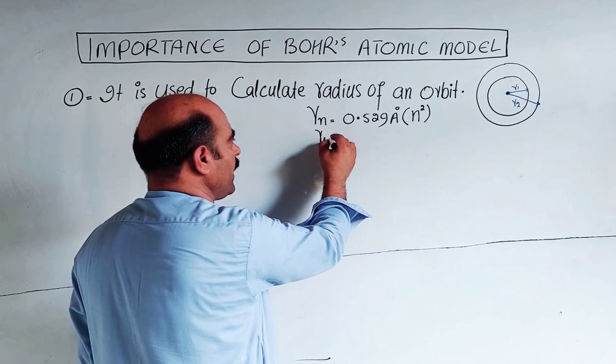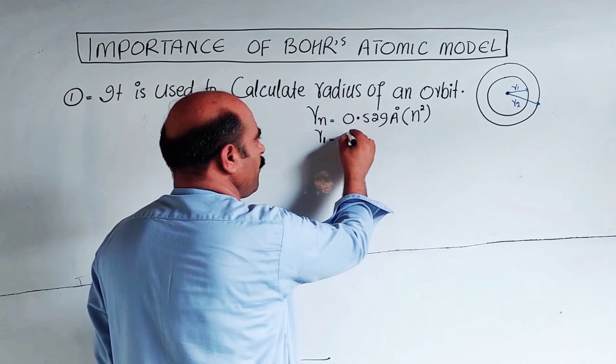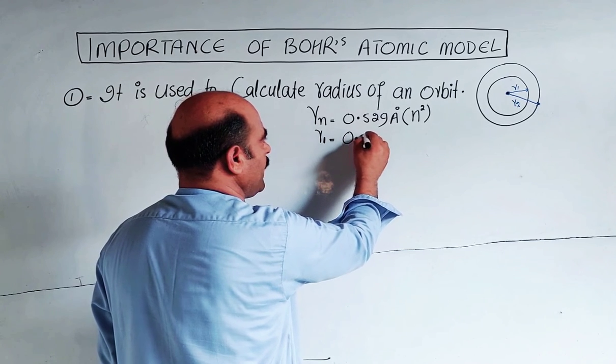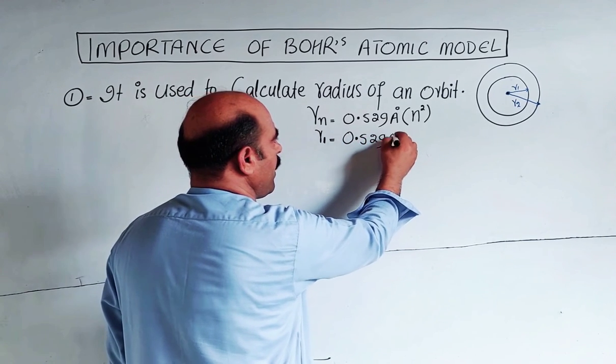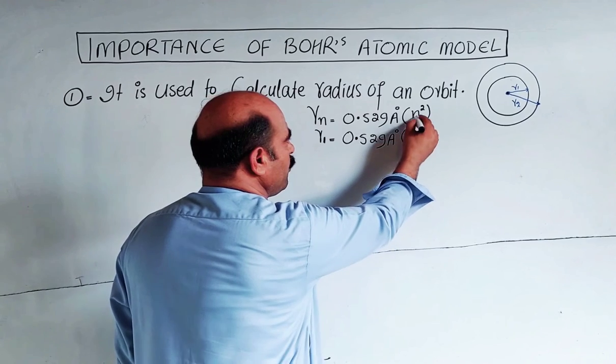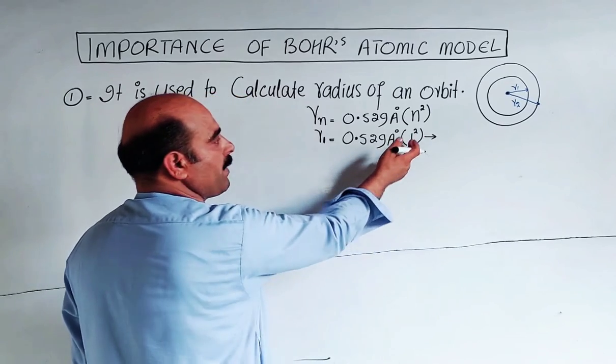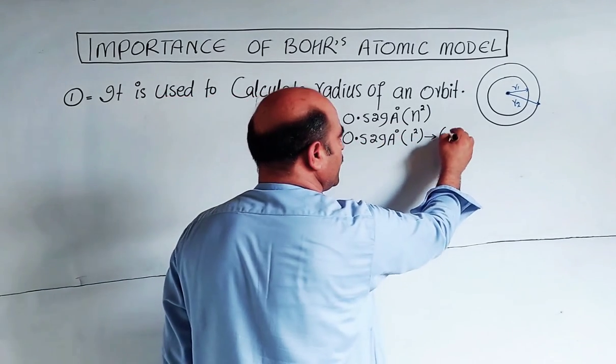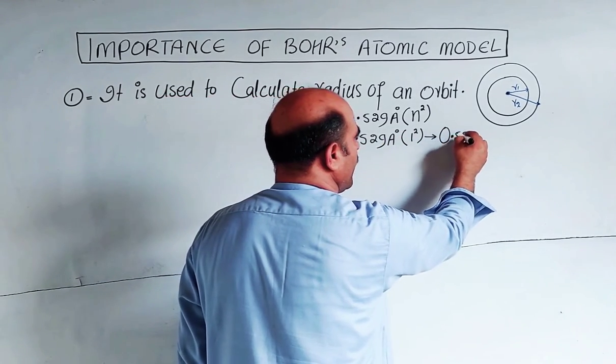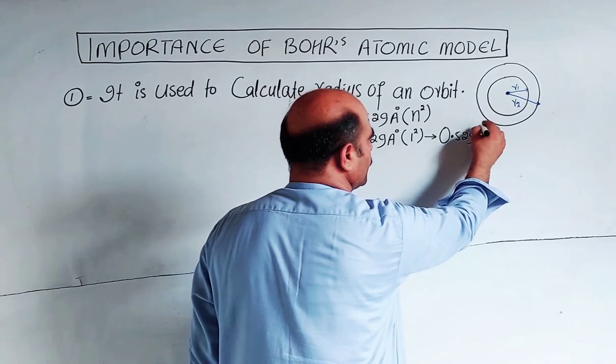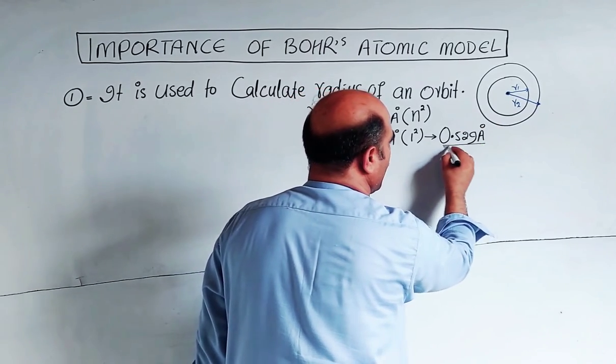For the first orbit radius, n equals 1. So we put 1 in the formula: 0.529 angstrom times n squared. When n equals 1, 1 squared equals 1, so the first orbit radius equals 1 times 0.529 angstrom, which is 0.529 angstrom.